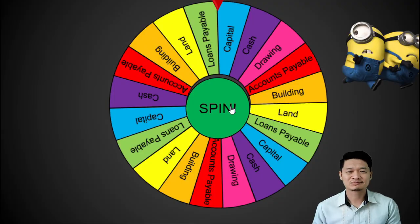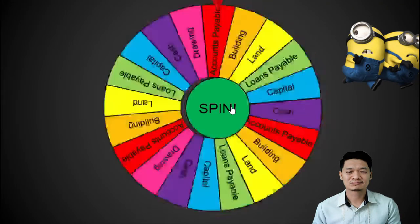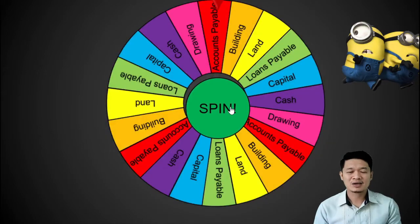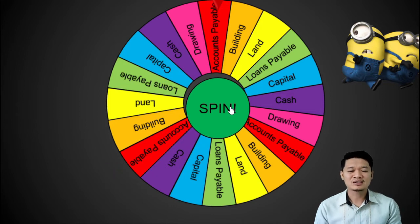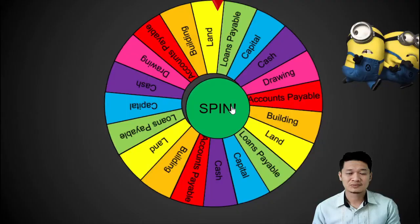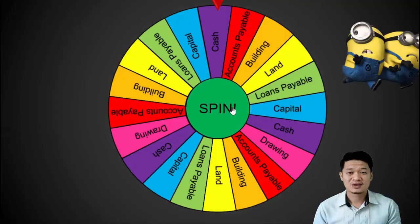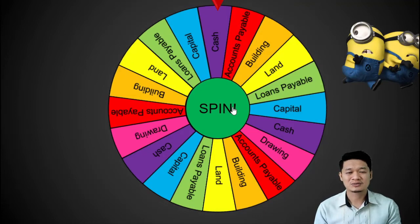Let's spin again. Next we have accounts payable. How will you identify accounts payable? Very good! It is under liability. You are doing great! Let's spin it again for one last time. Our next account is cash. How will you identify cash? Very good! It is under asset.